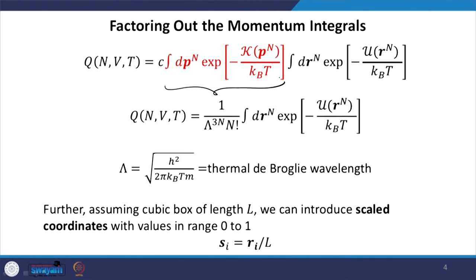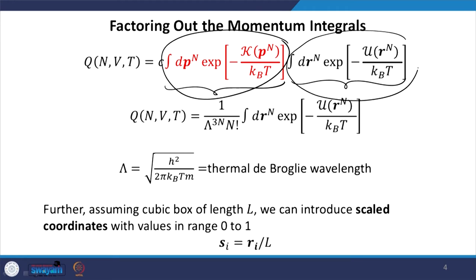If we can write the kinetic energy as p²/2m and if my U does not depend on the momenta, then we can factor out the p integral from the total integral. I just wrote the kinetic energy part separately and the potential energy part separately — the first integral only depends on p and the second only depends on r — and therefore we can pretty much factor out these two, which is how we got the expression for the partition function of an ideal gas.